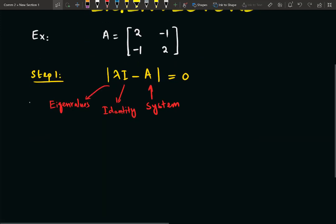So for this particular example, let us now solve it. So we have [λ, 0; 0, λ] in the form of a matrix minus the system matrix which was [2, -1; -1, 2].